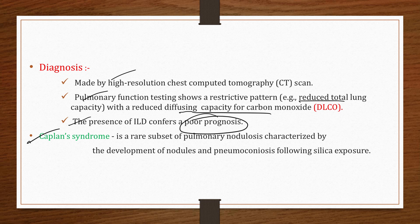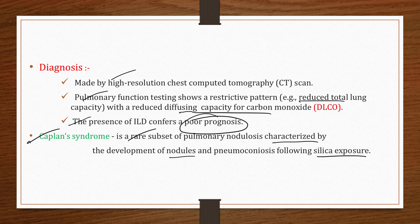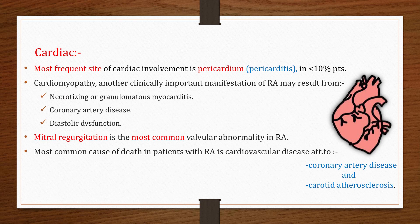Caplan syndrome, also known as rheumatoid pneumoconiosis, involves inflammation and scarring of the lungs in RA patients who have inhaled dust or coal particles, such as coal mine workers. It is a rare subset of pulmonary nodulosis characterized by the development of nodules and pneumoconiosis following silica exposure.